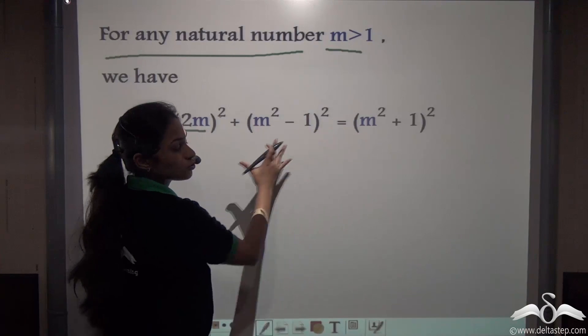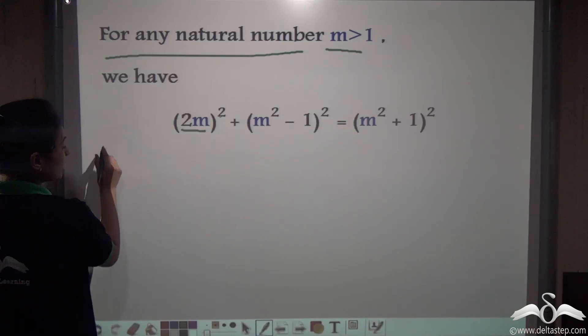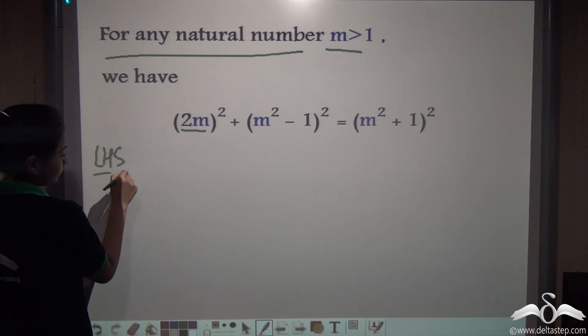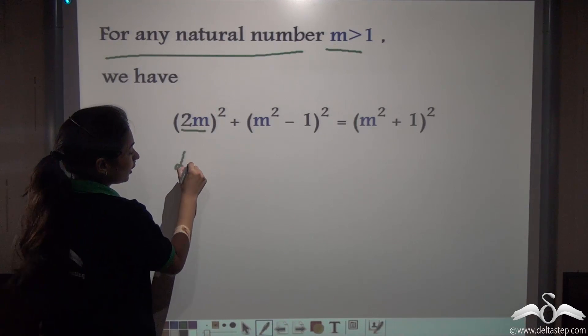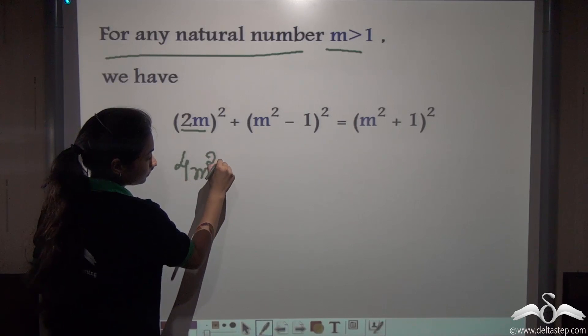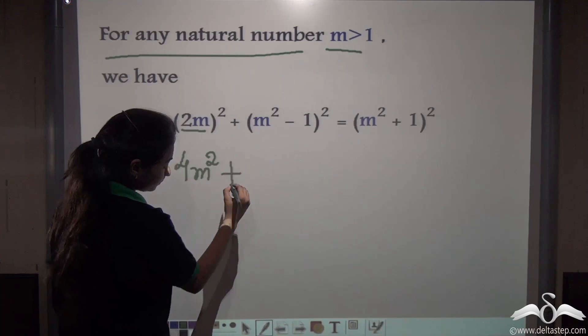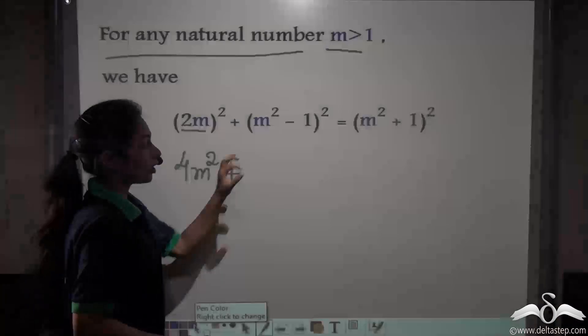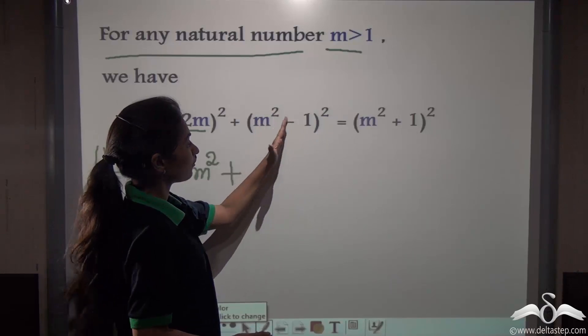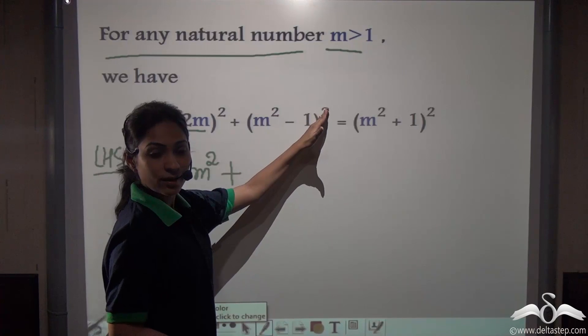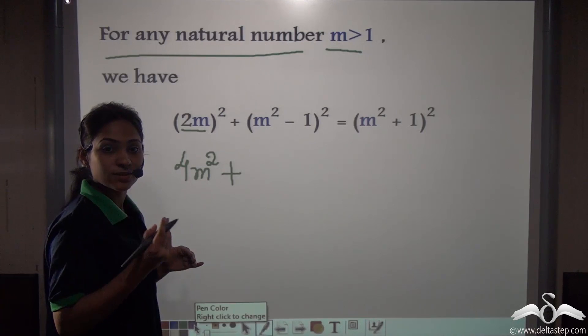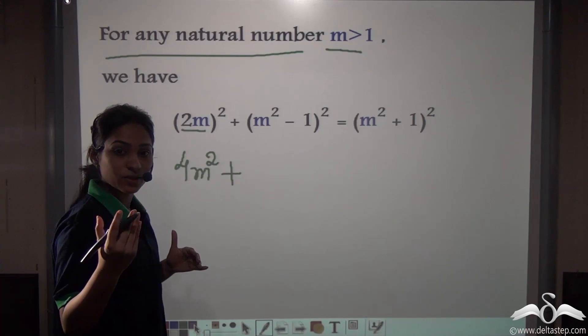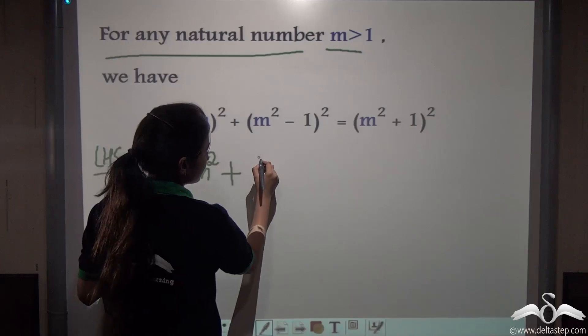Well, let's check and see whether this holds true for both sides. Find out LHS, 2m whole squared. Let's expand it. We get 4m squared plus, now let us expand this. This is in the form of a minus b whole squared and we can expand it by the formula a minus b whole squared is equal to a squared plus b squared minus 2ab. So let us expand this.